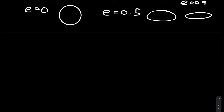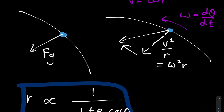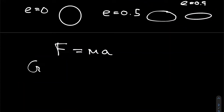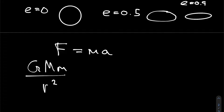So how do we solve this using physics? Kepler didn't have access to Newton's laws, but we do. Newton's second law says F = ma: the net force on our planet equals its mass times its acceleration. The only force acting on the planet is gravity Fg, which equals G·M·m over r². Because this is a center-seeking attractive force, we give it a negative sign.